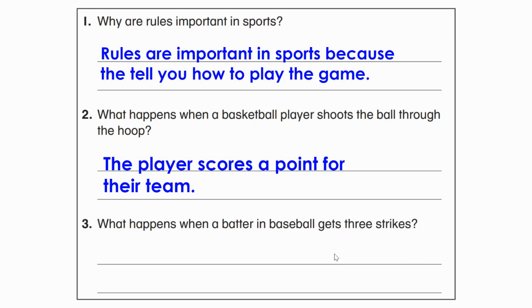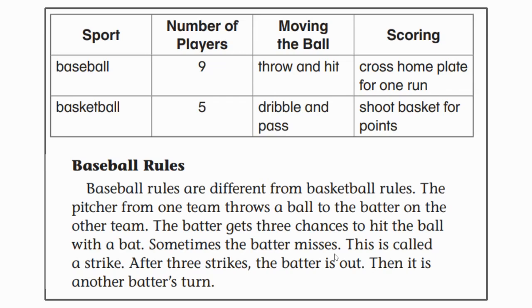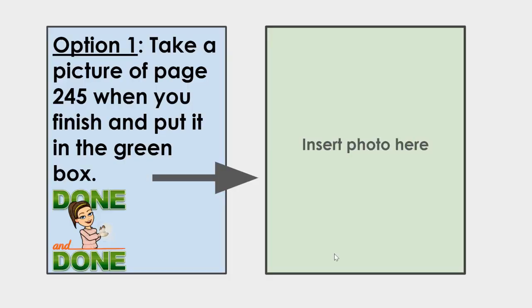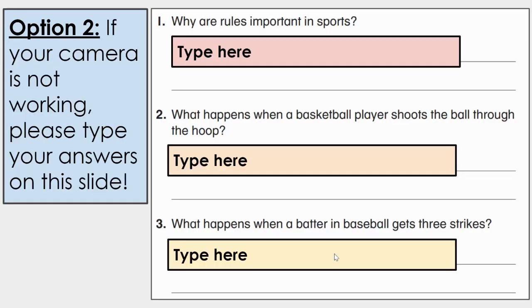Okay, second graders, now it is your turn. What happens when a batter in baseball gets three strikes? Do you remember what happens after they've got three strikes? You can go back and find that information in the section titled Baseball Rules. Make sure you find the evidence in the text to support your thought. Then write down your answer in a complete sentence for number three. When you are finished, take a picture of page 245 and insert it in the green box. If your camera is not working, please type your answers on this slide so I can check them. Thanks for following along and starting to think about cause and effect in our texts.